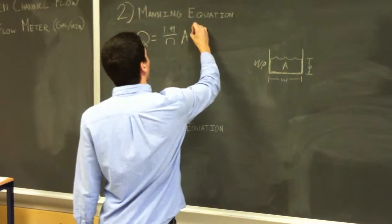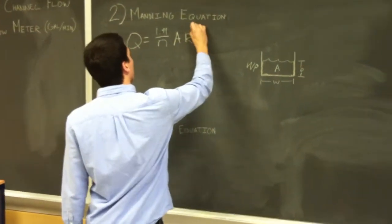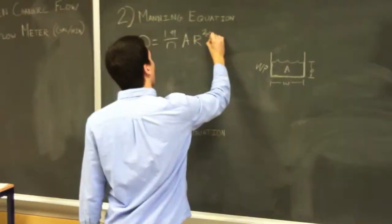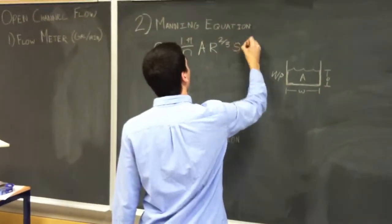times the hydraulic radius to the power of two-thirds, and then times the slope to the one-half.